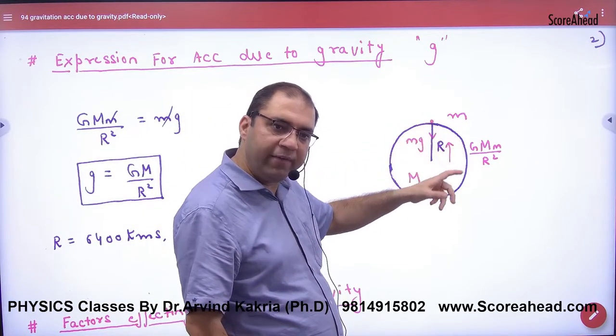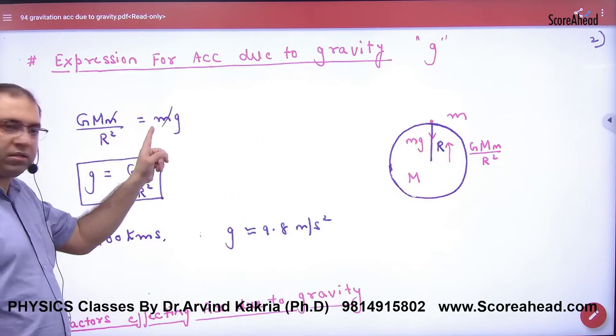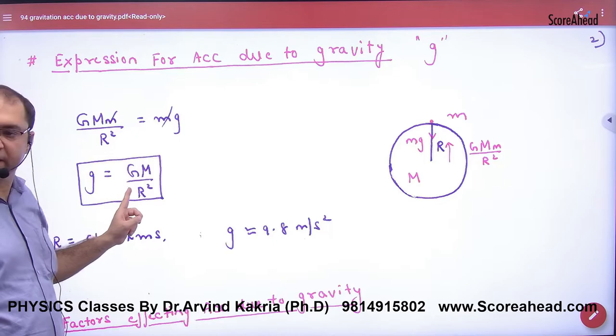What will be the force? GMm by R square. So you will equate them. We will equate: small m to small m cancels, small g value, GM by R square.